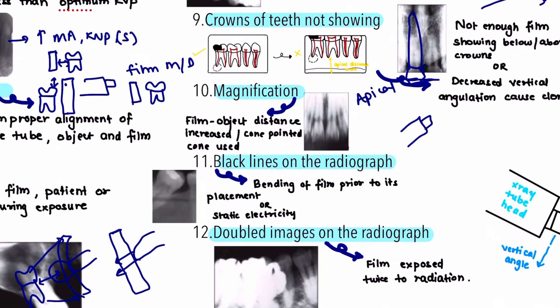The next error is magnification, which can occur if the film-object distance is increased or if a pointed cone is used, which produces a divergent beam. The correction is to use the proper recommended distance between the source and object, and to use an open-ended lead-lined cone.